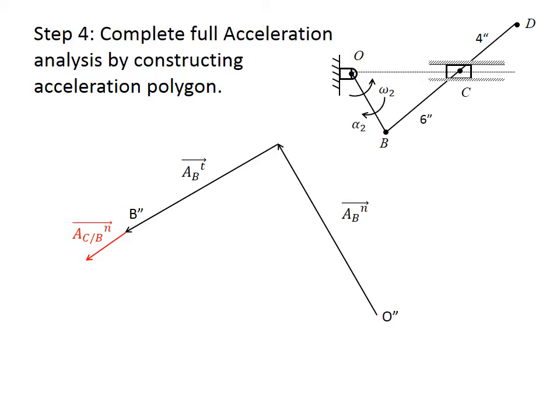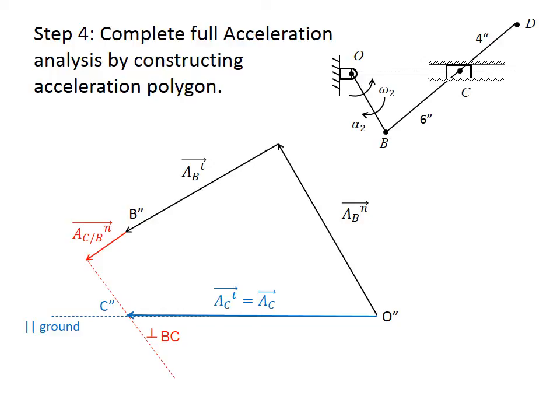We don't know the remaining two accelerations — AC tangential and ACB tangential — but we know the direction of both. So we draw their directions: one perpendicular to BC (where the tangential relative acceleration of C versus B lies), and one parallel to the ground (where the acceleration of C lies). These two hidden lines intersect at C', and the vector from O' to C' represents the total acceleration of point C.